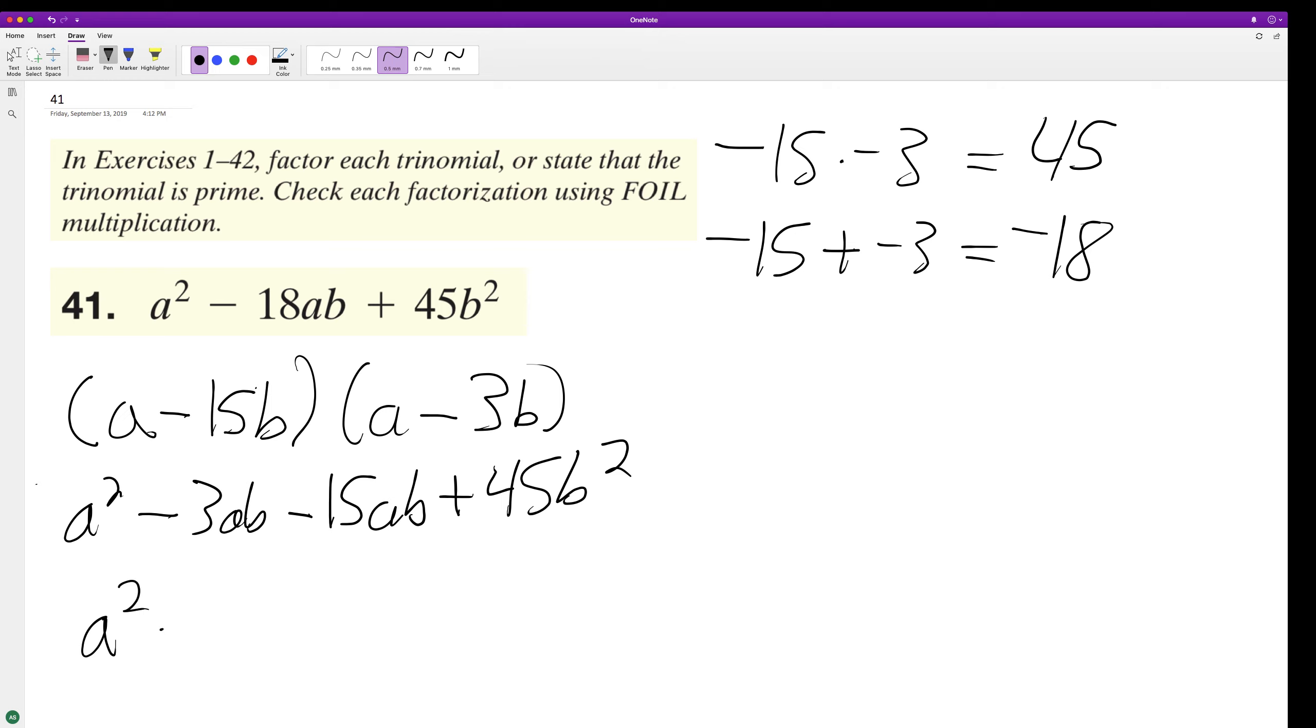Combine like terms, a squared minus 18ab plus 45b squared.